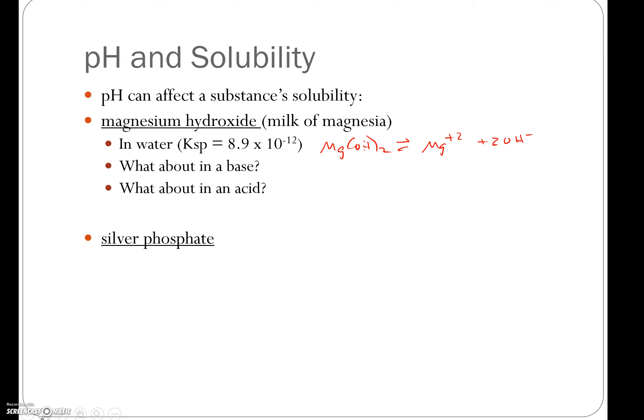Let's look at silver phosphate. Silver phosphate has a Ksp of 1.8 times 10 to the minus 18. So again, it's a very slightly soluble salt.